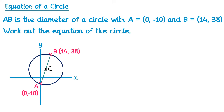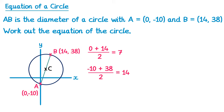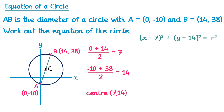Using the midpoint formula: we add the x coordinates, 0 and 14, and divide by 2, giving 7; and for the y coordinates, negative 10 and 38: negative 10 add 38 divided by 2 gives 14. So the coordinates of C are (7, 14). This tells us the equation of the circle must be (x minus 7) all squared plus (y minus 14) squared equals r squared.